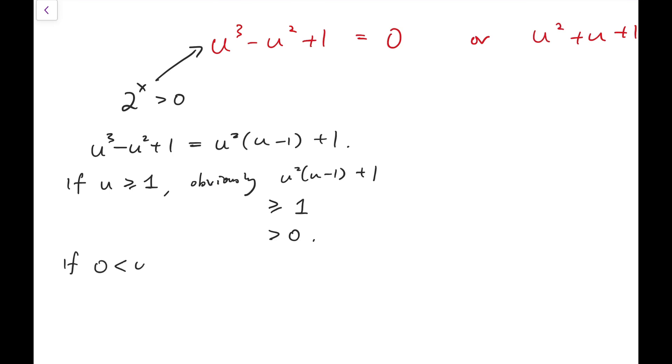Now, if u is between 0 and 1, then u squared times u minus 1 is greater than minus 1, because u squared here is positive, and it's less than 1. And for this part, it's negative, but still it's less than 1. So when they multiply, it will be a negative number.